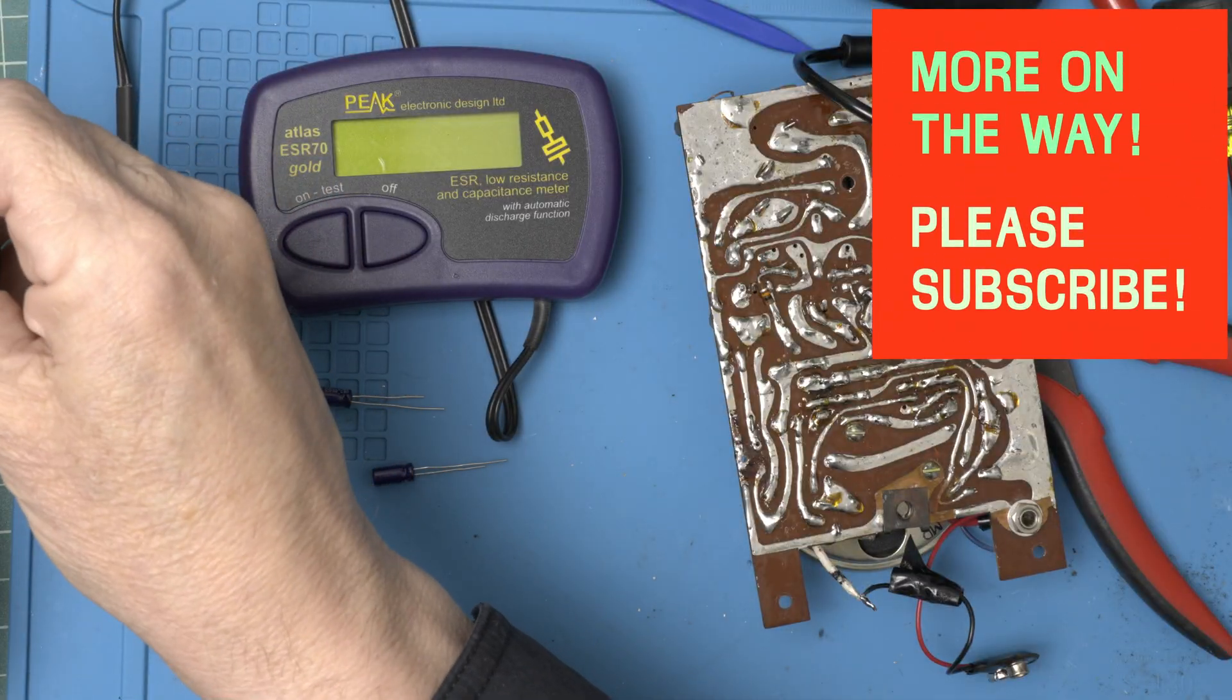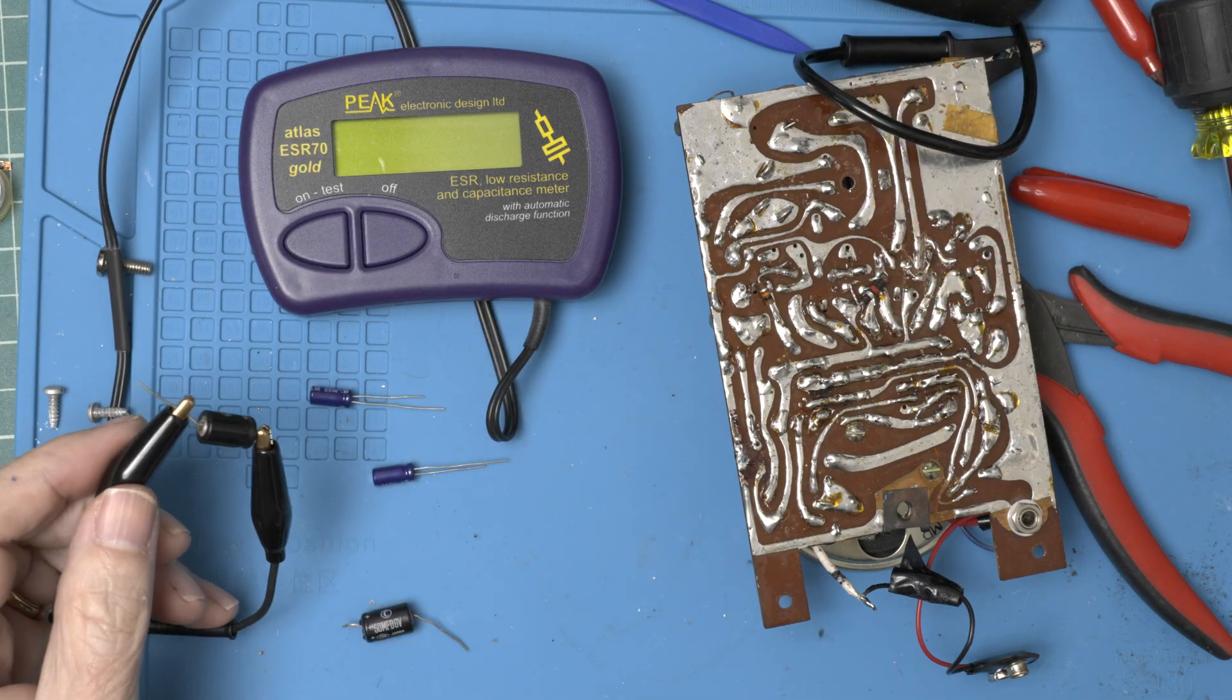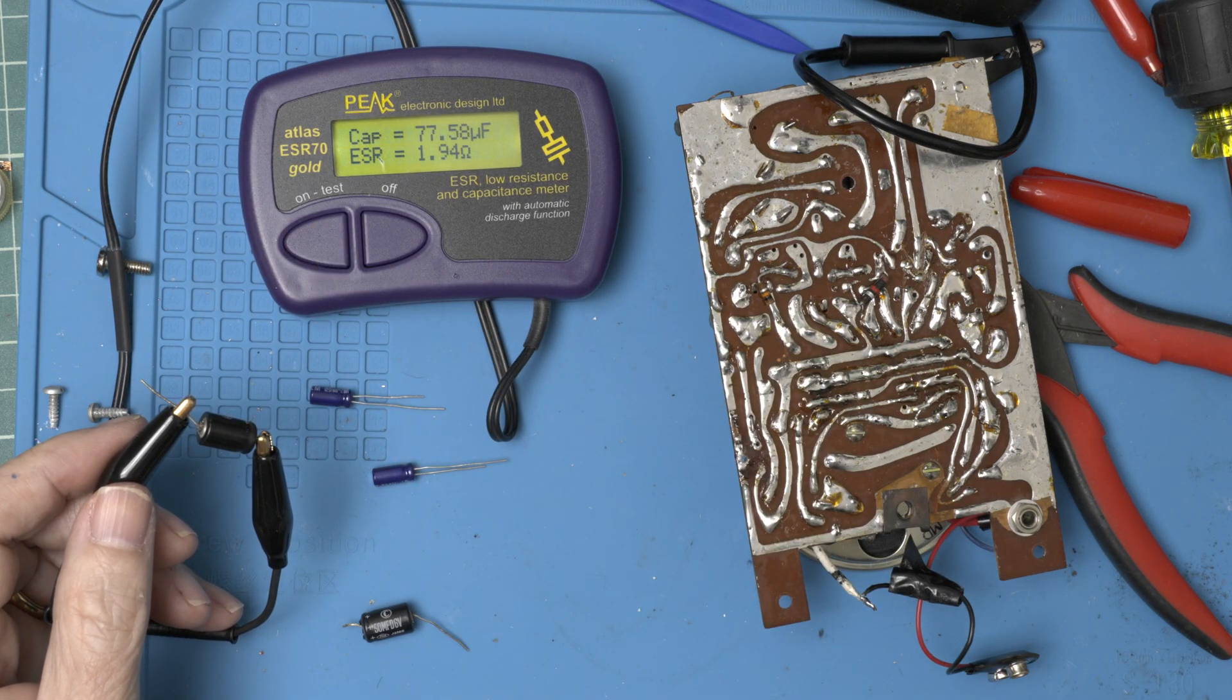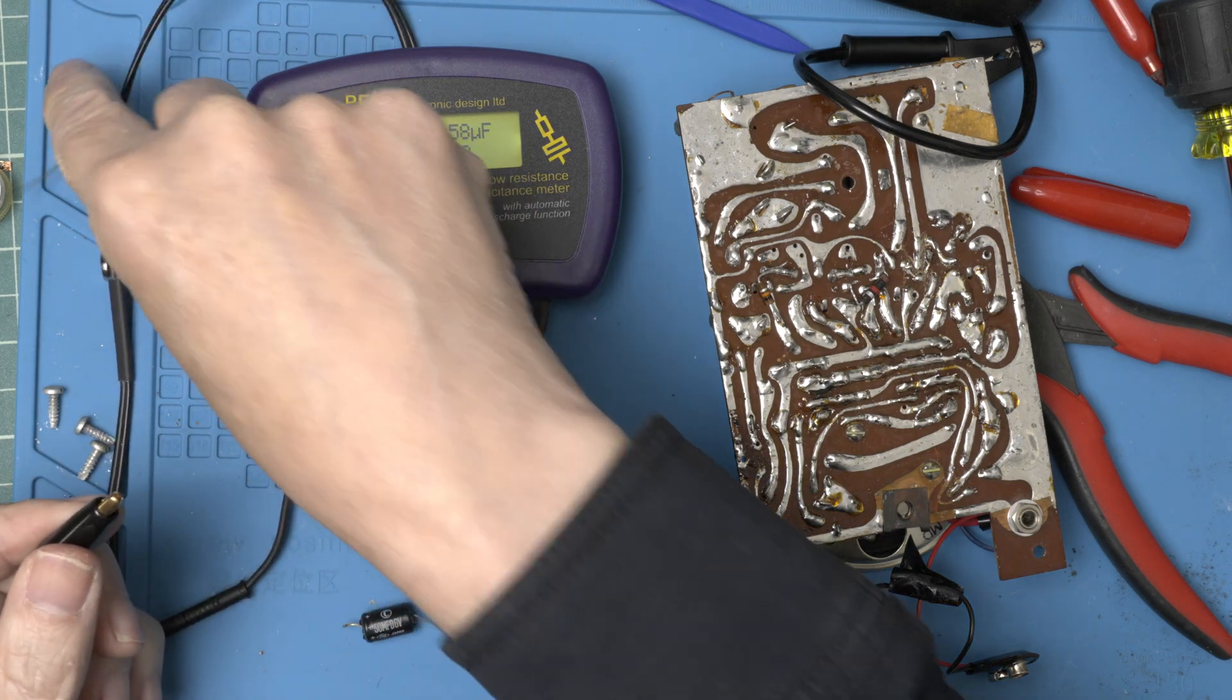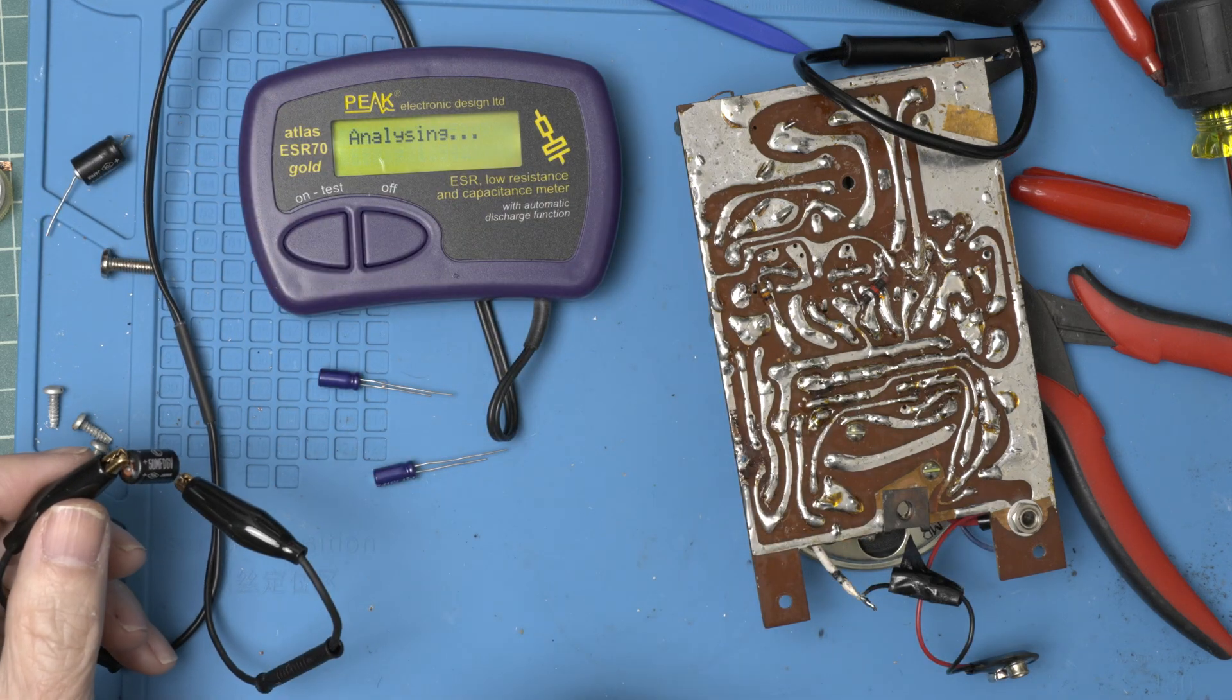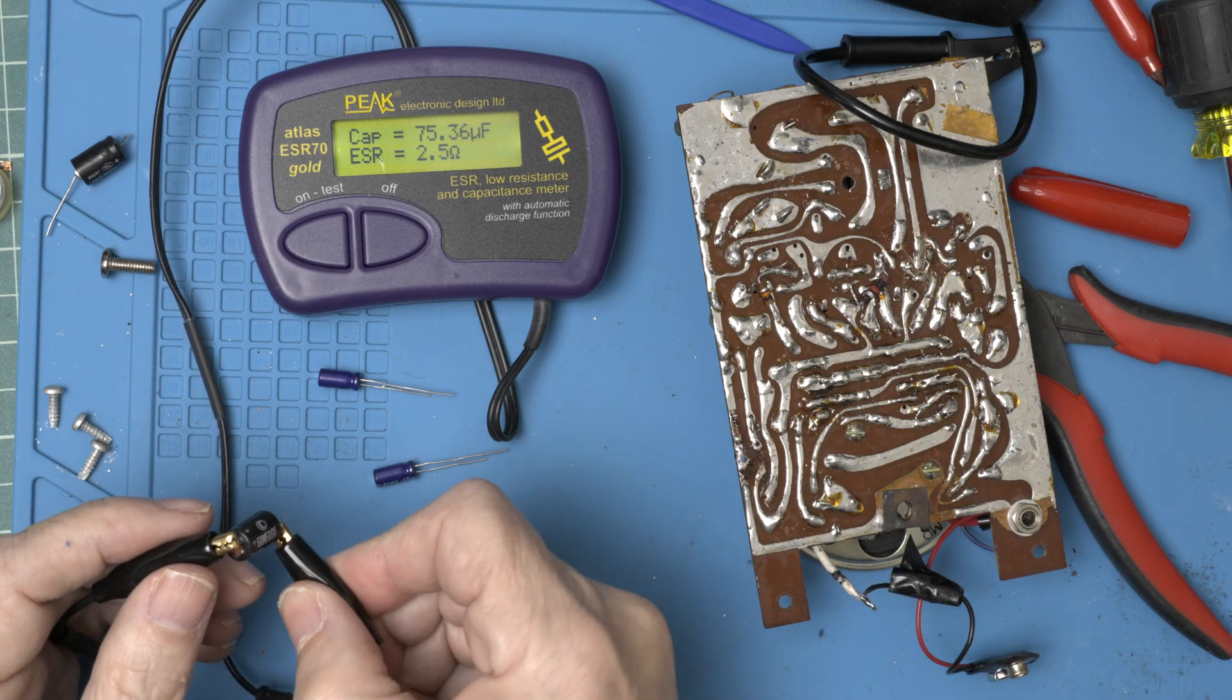Something I've had fun doing is comparing the caps we pulled out with the new ones we're putting in. Let's take a look at the 50 we just took out. 77 with an ESR 2. Not completely terrible. And how about the other one? Very similar. 75, 2.5.